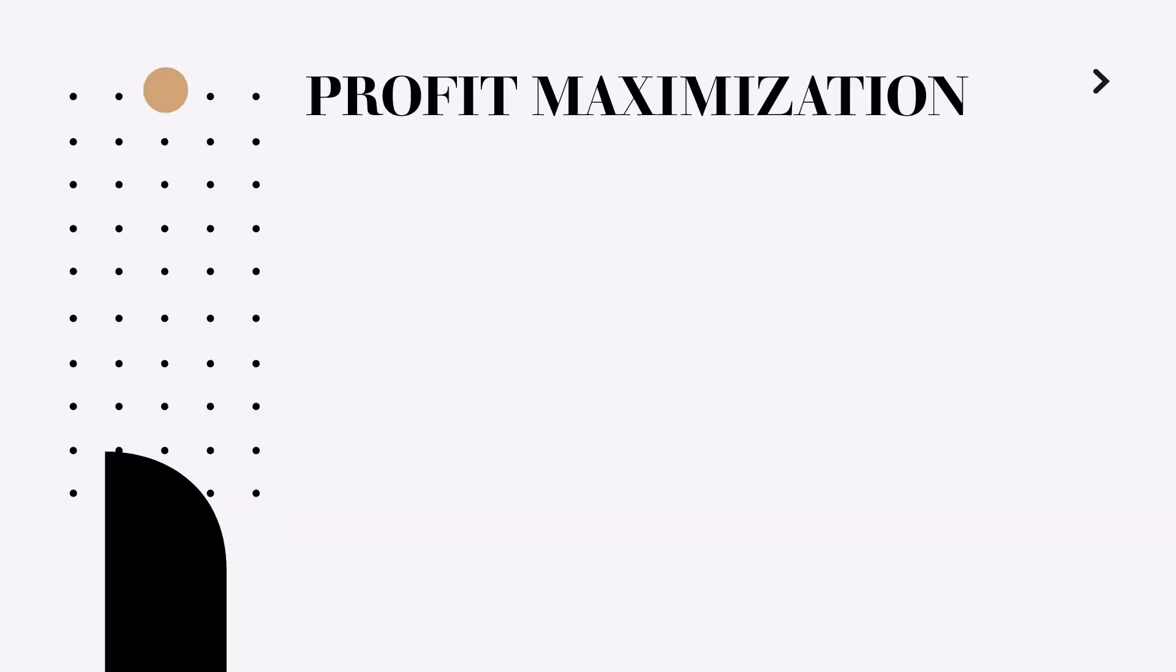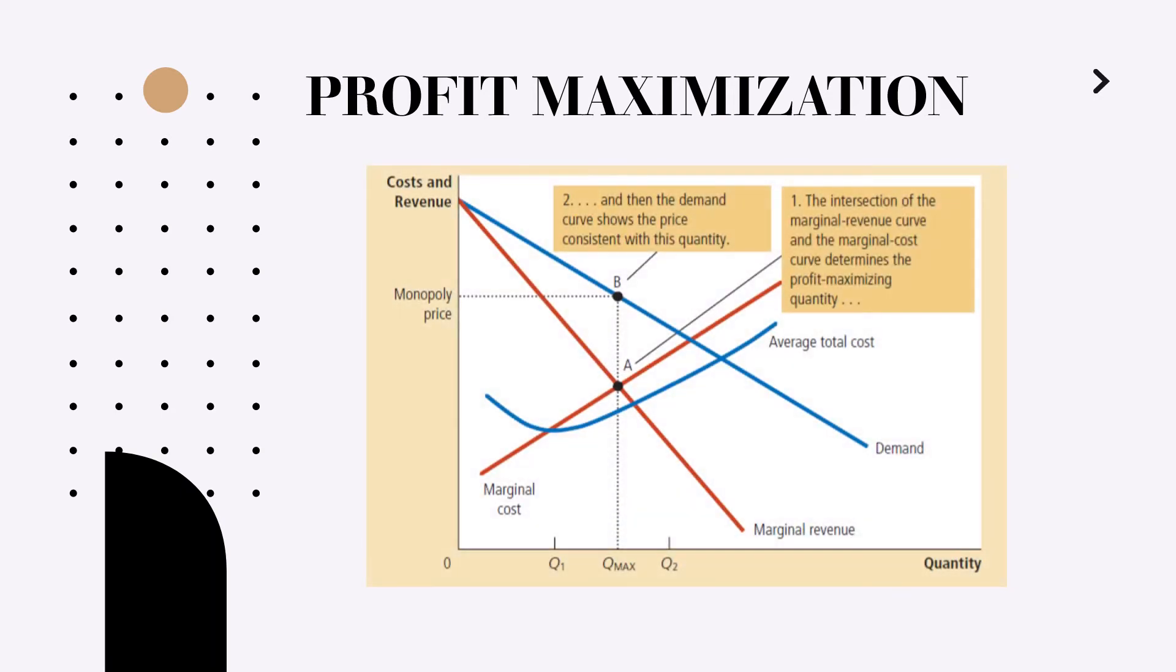Now what is the profit maximization strategy for a monopoly. A monopoly maximizes profit by choosing the quantity at which marginal revenue equals marginal cost. In our case it's the point A. However the monopoly then uses the demand curve to find the price that will induce consumers to buy the quantity.